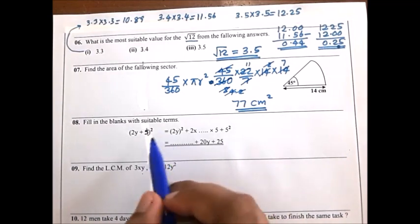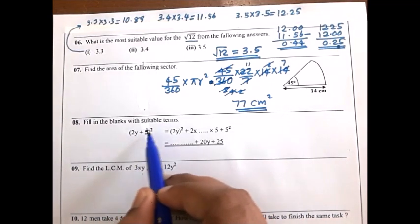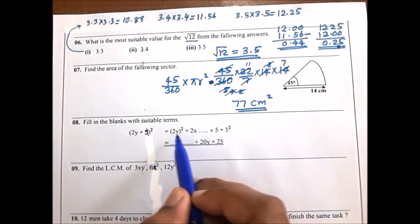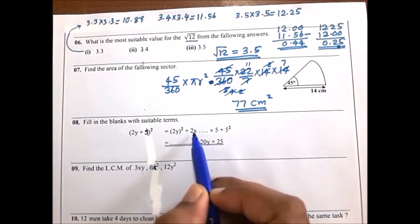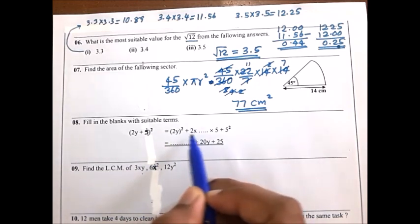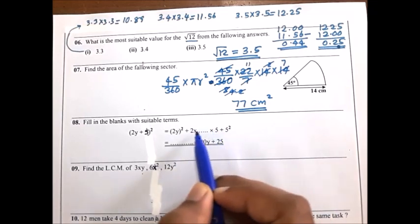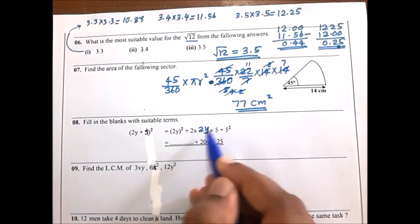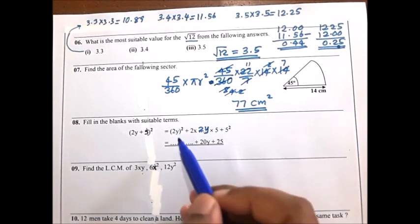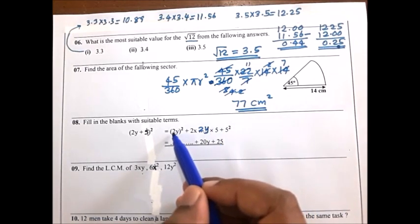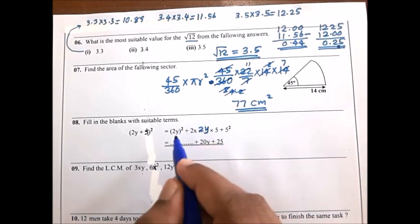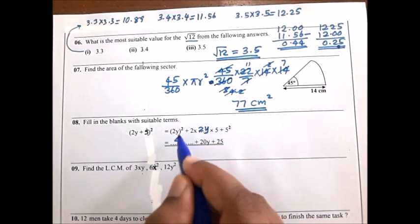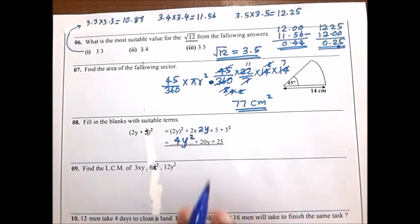For the 8th question, this is the square of a binomial expression. First write the square of the first term, then 2 times the product of the first and second terms, then expand: 2 to the power 2 is 4, and y to the power 2.